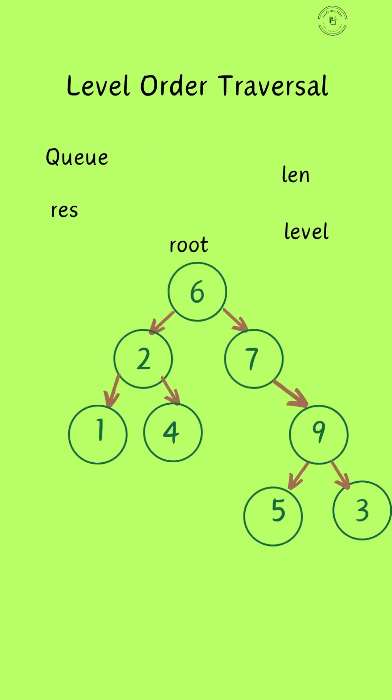At the beginning, we append the root to the queue. Then we find the length of the queue, which in this case is 1, and we pop from the queue and place it on the result array.